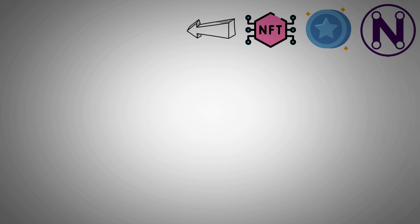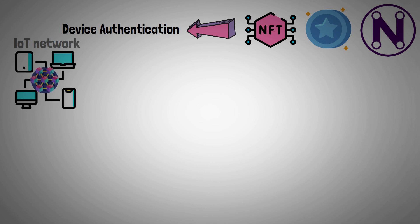Few examples are Device Authentication. Within IoT network, every device on the blockchain can have a corresponding token or NFT that acts as a unique identification for it.